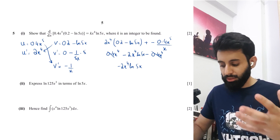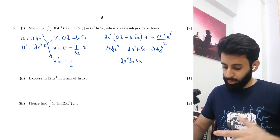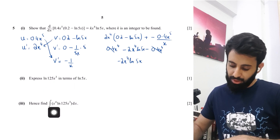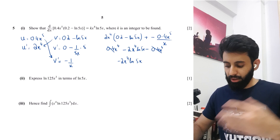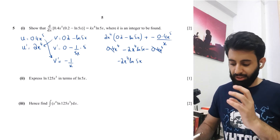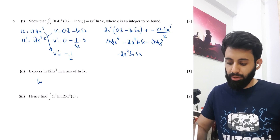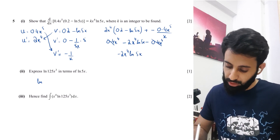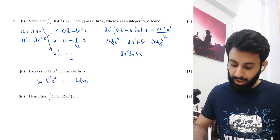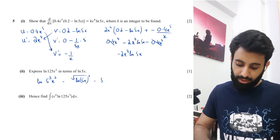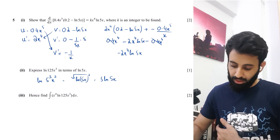Moving to part 2: express ln(125x^3) in terms of ln(5x). The examiner is being very helpful here, guiding you step by step so you have all the ingredients ready for part 3. Using log rules: 125 = 5^3, and we already have x^3, so we can write this as ln(5x)^3, then bring the 3 down as a multiplier: 3·ln(5x).